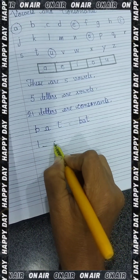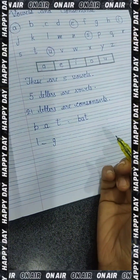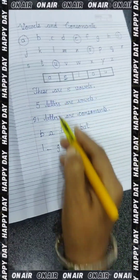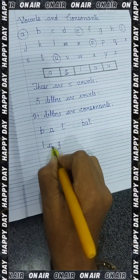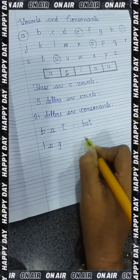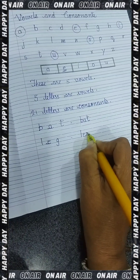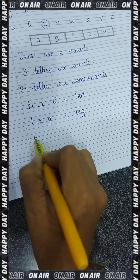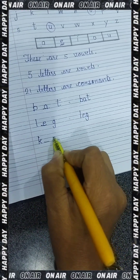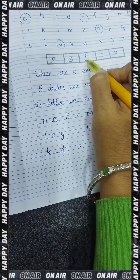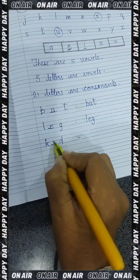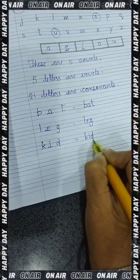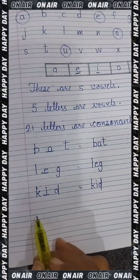Next: L and G — by themselves nothing. But the vowel E came and helped them — L, E, G — LEG. Next: K — the vowel I helped, so K, I, D — KID.